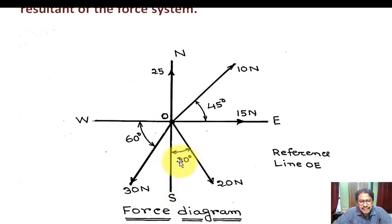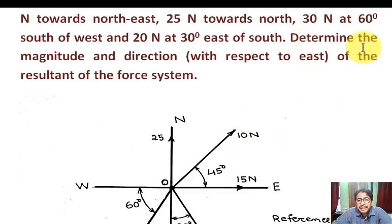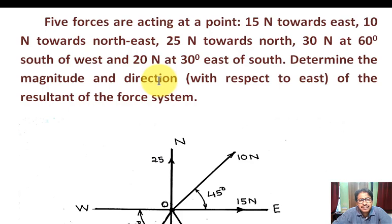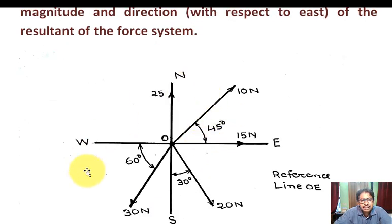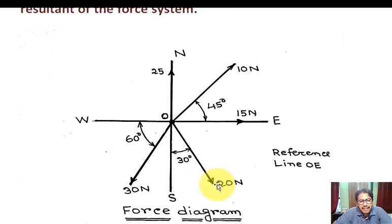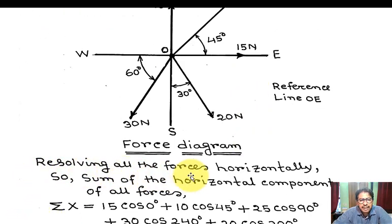Determine the magnitude and direction of the resultant of the force system, with respect to east (reference OE). Find resultant magnitude and direction. Now resolving all the forces horizontally — summation of the horizontal component of all forces, summation X.